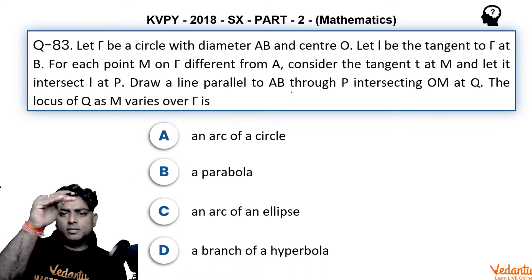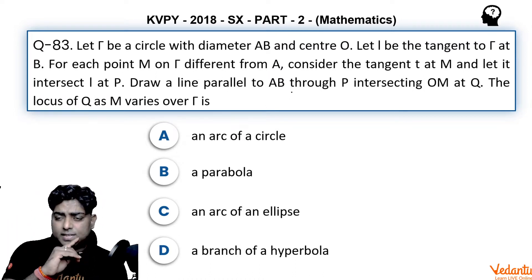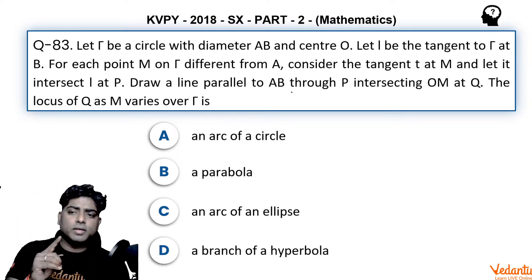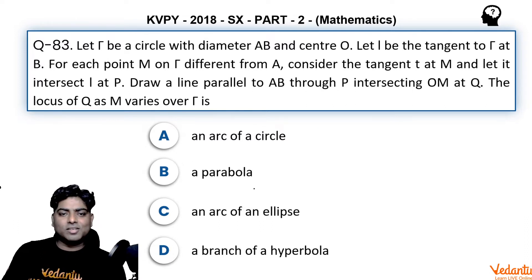Draw a line parallel to AB through P, intersecting OM at Q. The locus of Q as M varies over Γ is...